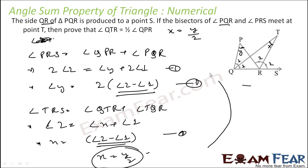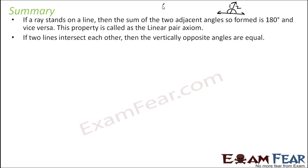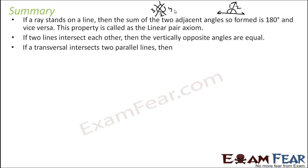Quick summary: If a ray stands on a line, the sum of the adjacent angles formed is 180 degrees — and vice versa. This is called the linear pair axiom, established by geometric observation. If two lines intersect each other, the vertically opposite angles are equal — angle 1 equals angle 2, and angle 3 equals angle 4.